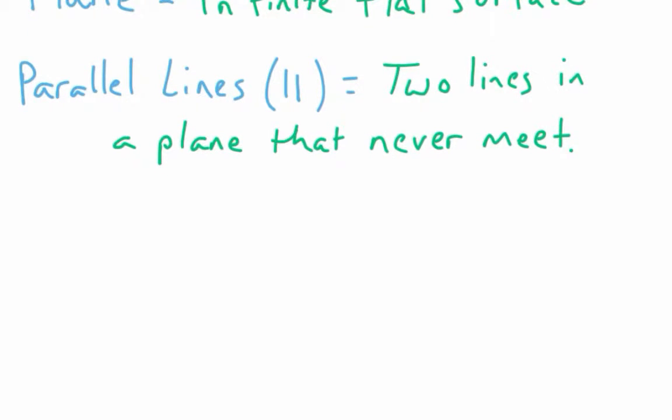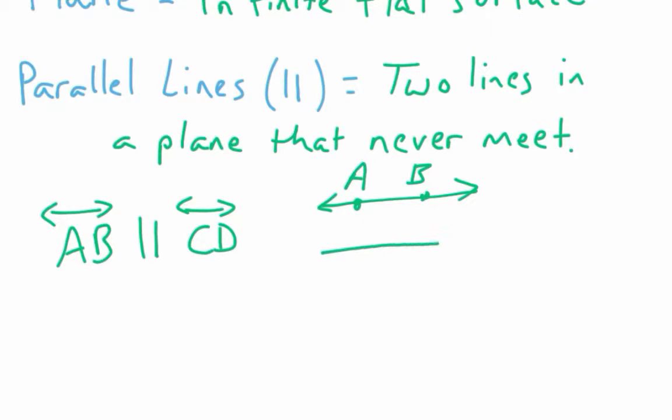So if we were to kind of go back to how we were writing lines yesterday, if we would say the line AB, so you have the A and the B with the arrow over the top. If that were to be parallel to line CD, it would look something like, so here's my first one. I'll say that's A and that's B. Then line CD has to stay in that same distance away. So C and D. That they'll never cross.